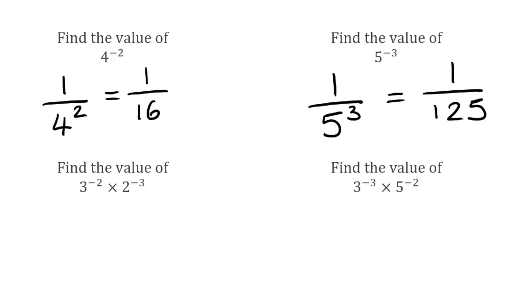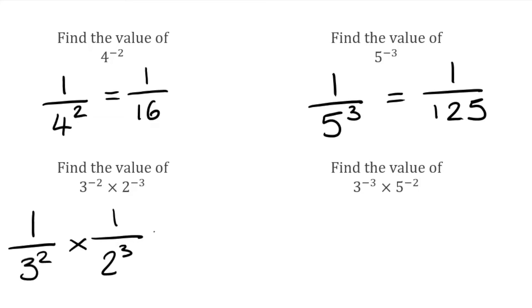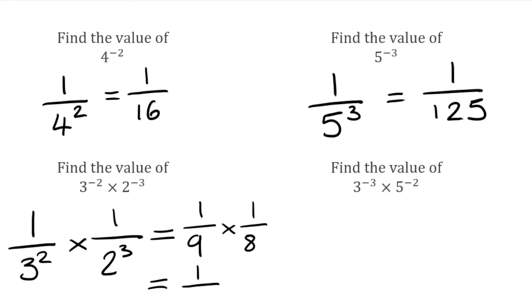For this next question, we've got 3 to the power of negative 2 multiplied by 2 to the power of negative 3. The first one, 3 to the negative 2, is the same as 1 over 3 squared. Then 2 to the negative 3 becomes 1 over 2 cubed. Simplifying: 1 over 9, multiplied by 1 over 8. Multiplying through, our final answer would be 1 over 72.